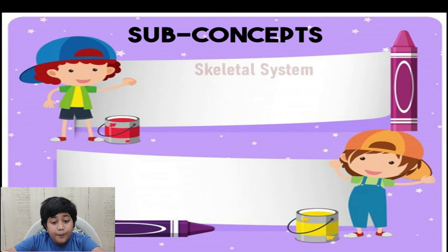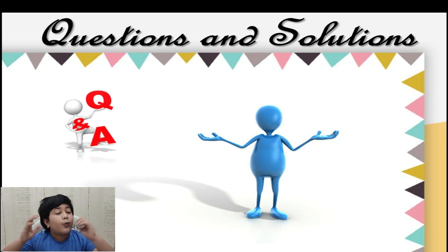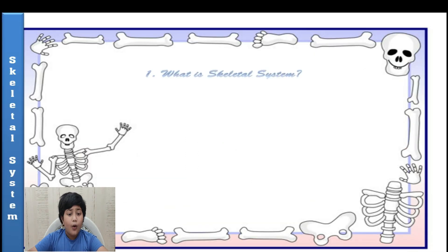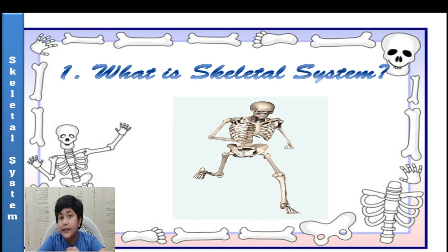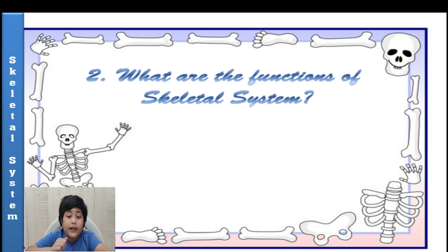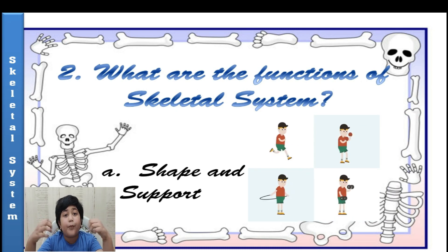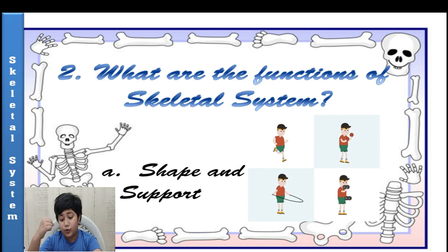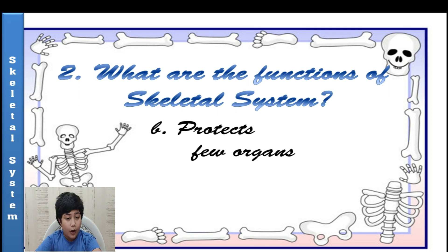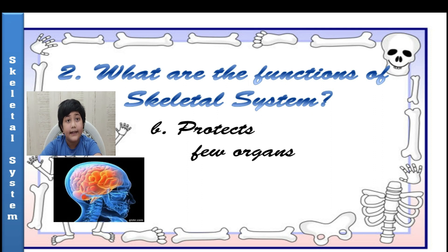Now we will understand the sub-concepts: skeletal system and muscular system, with the help of questions and solutions. What is the skeletal system? The skeletal system is the framework of bones that lies below the skin and muscles in our body. Bones are made up of calcium. The skeletal system gives shape and support to our body and helps us to move. It also protects a few organs — for example,